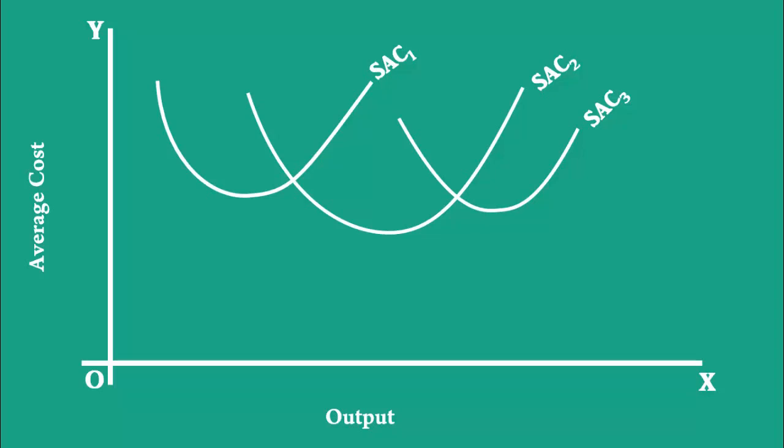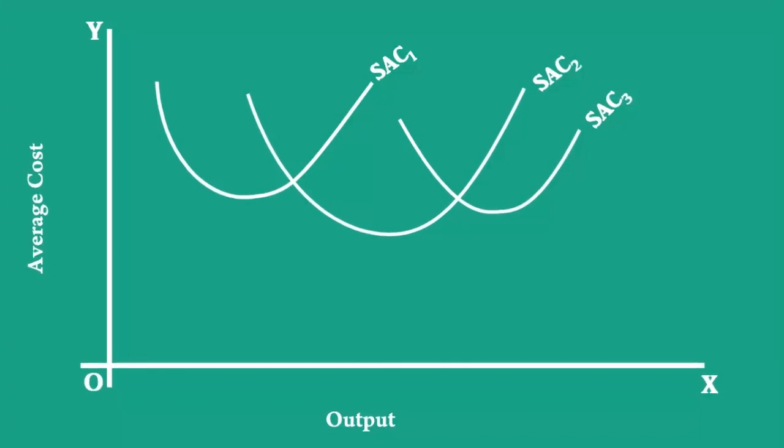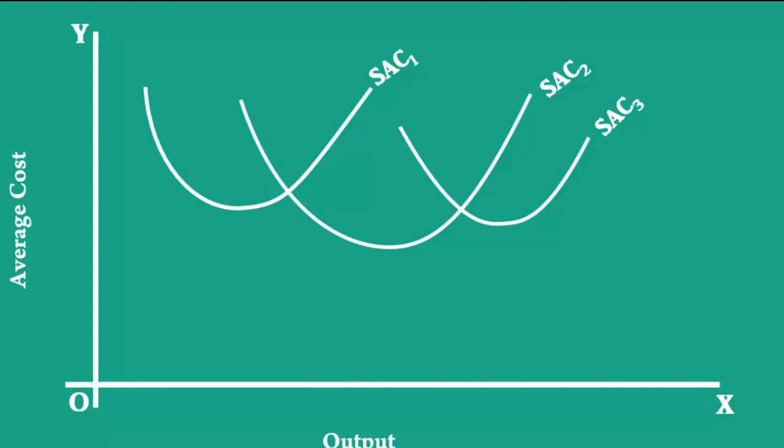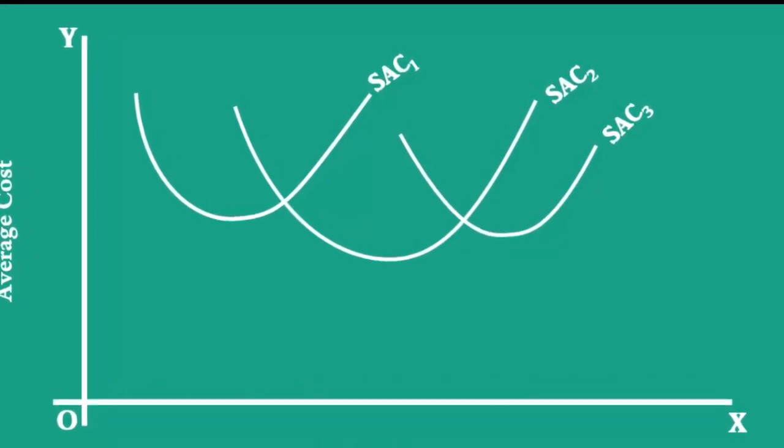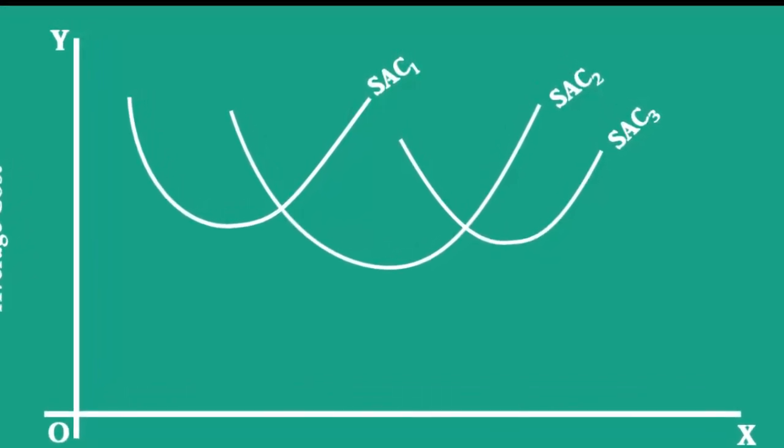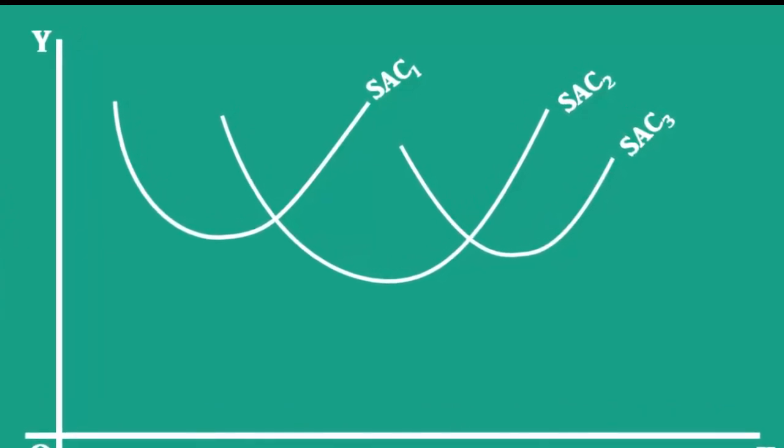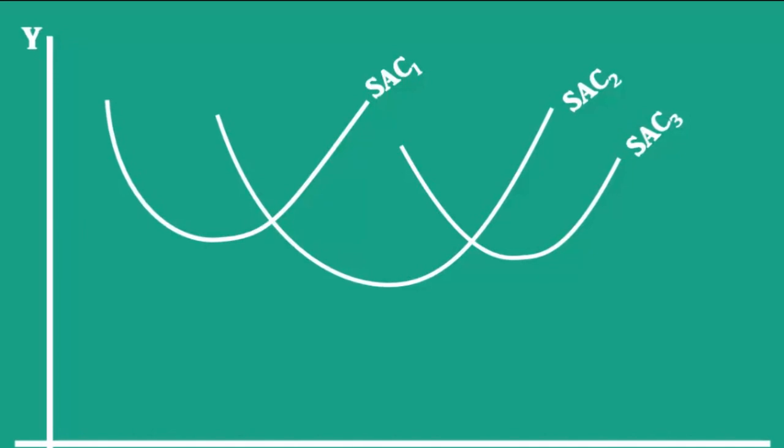Now, how to obtain the long run average cost curve? Understand, SAC1, SAC2, and SAC3 are short run average cost curves of three short periods. These three periods at a stretch become a long period for the firm.